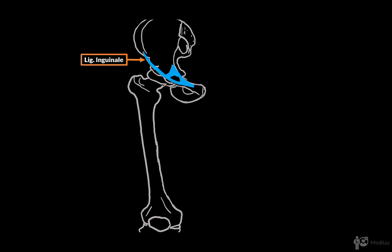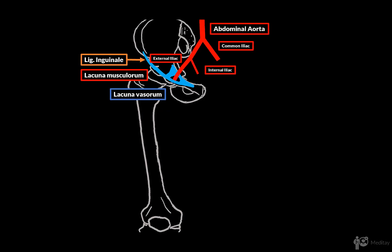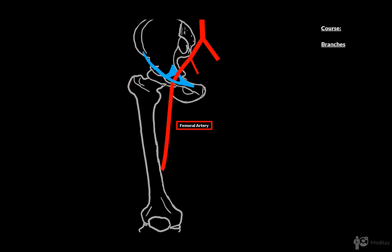It enters the thigh from behind the inguinal ligament in a canal called the vascular space or the lacuna vasorium in Latin, and gets the name femoral artery only after it passes the vascular space. First I'll cover the course of this artery, where it starts and ends, and then I'll cover the branches.